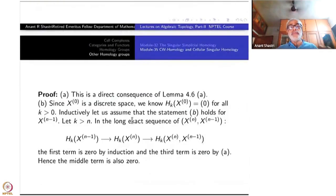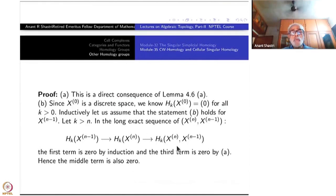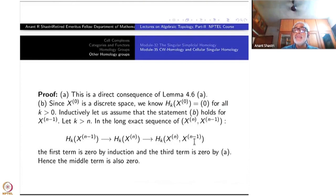Inductively assume that statement B holds for XN-1. If K is greater than N, I want to show that HK of XN is 0. In the long homology exact sequence, HK of XN-1 XN-1 is 0 by the inductive hypothesis, and HK of XN-1 XN is also 0 by part A. Therefore the middle term must be 0. So B is proved.